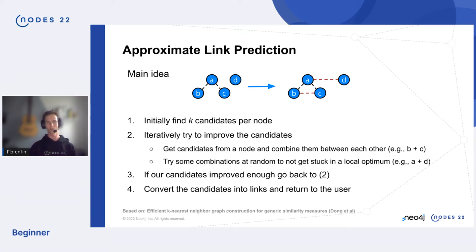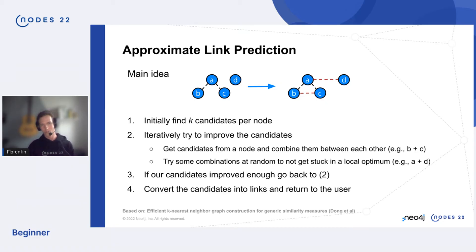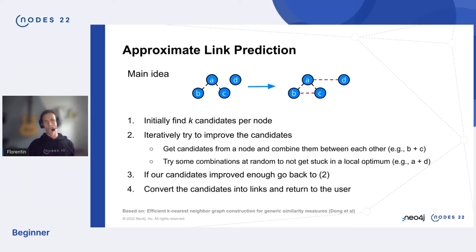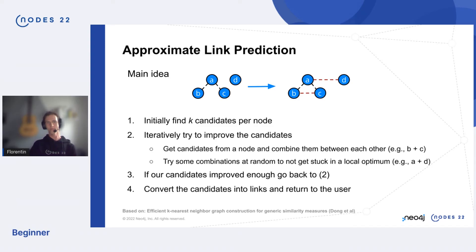Instead of trying every combination of node pairs, approximate link prediction finds K candidates per node — initially selected randomly or via a random walk depending on your configuration. Over multiple iterations we improve these candidates step by step, combining neighbors' candidates with each other. We also inject random node pairs to explore further. When the candidates stop changing significantly between iterations, we know we're done and return the results.